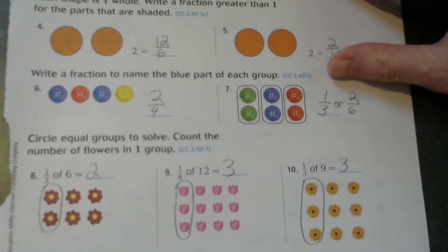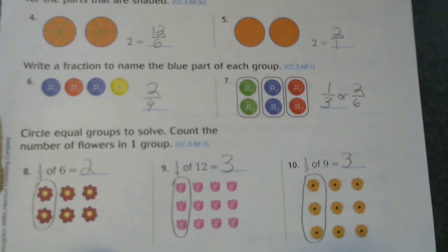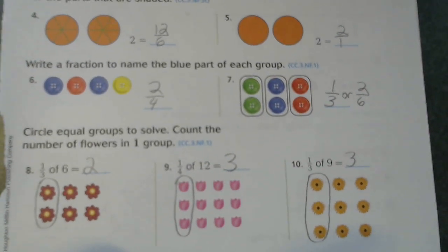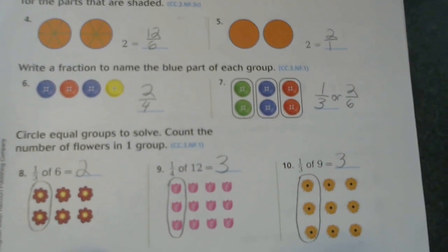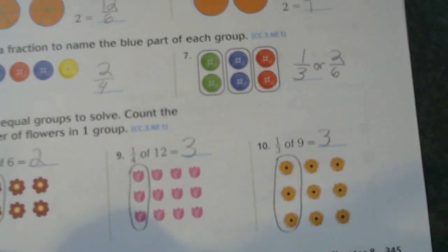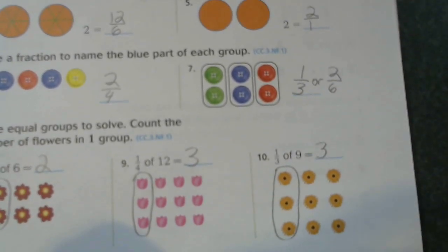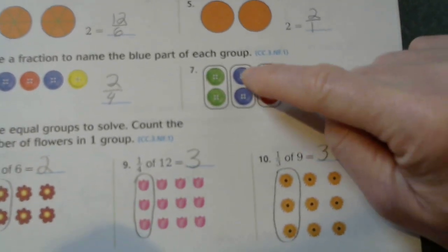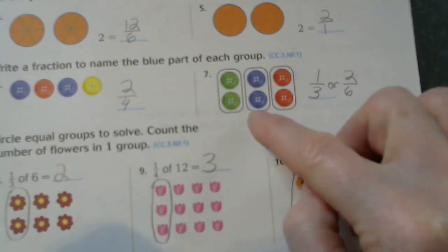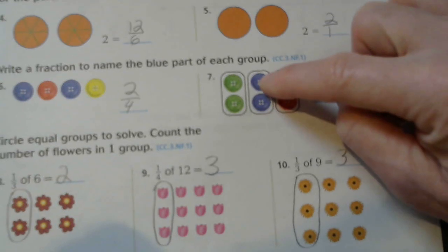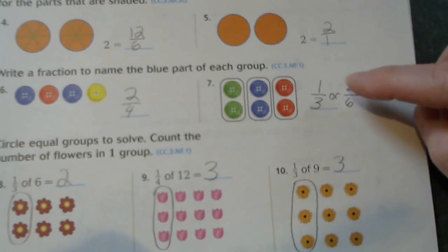Now number six says write a fraction to name the blue part of each group. If you count the total number in number six, there are four buttons and there are two blue buttons. So our fraction is two fourths. Seven is a little different because you can do it two ways. They have it divided into thirds, so you could choose third as your denominator, and one group is blue, so it could be one third. Or you could count the total number of buttons, that would be six, and two out of the sixth are blue, which would be two six or one third.